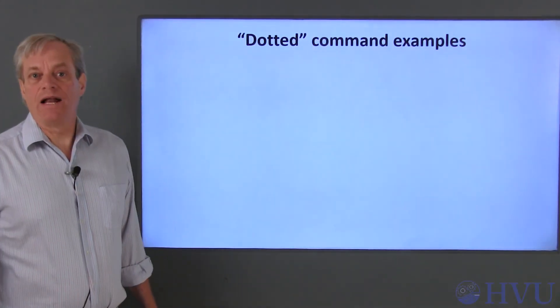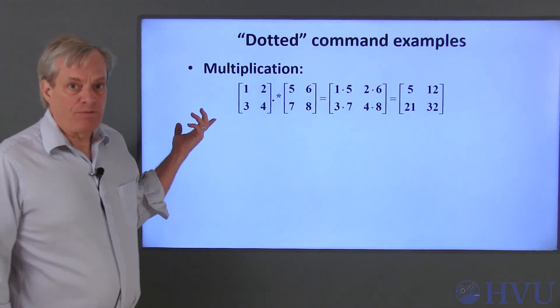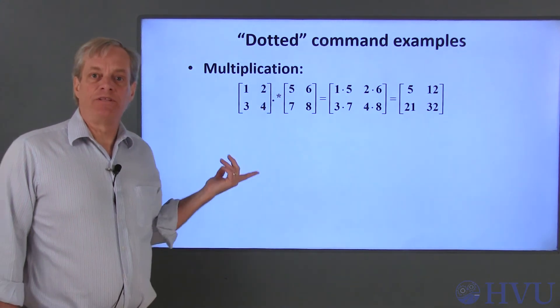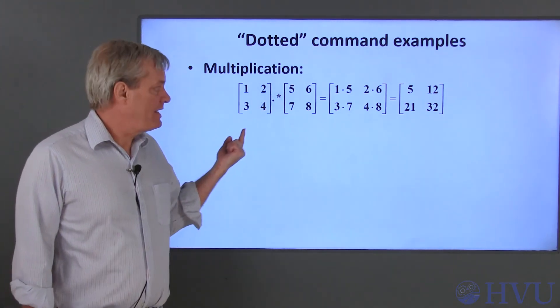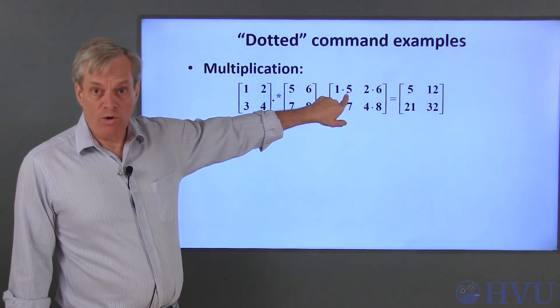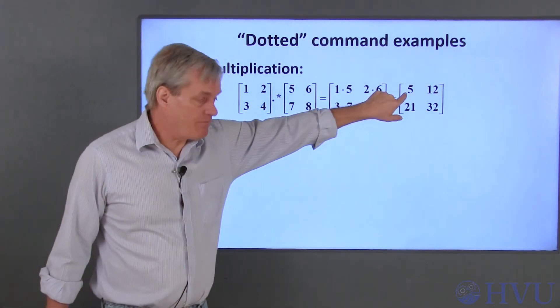Let's look at a few examples to illustrate how these operators work. First, let's look at multiplying two arrays using dot times. The result is simply the multiplication of the corresponding elements of the two arrays. So the element in the first row and the first column is the product of 1 and 5, which is 5.